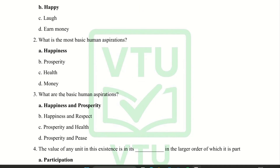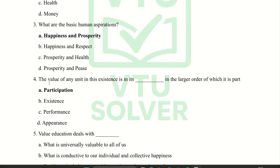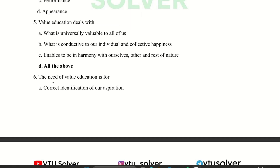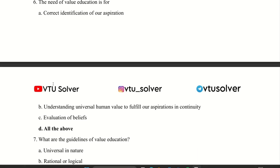Third question: what are the basic human aspirations? Answer: happiness and prosperity. Fourth question: the value of any unit in existence is in its participation in the larger order of which it is part. Next question: value education deals with — all of the above. Next question: the need for value education is — all of the above.